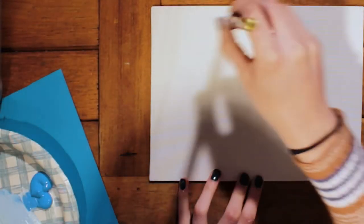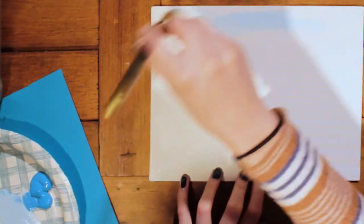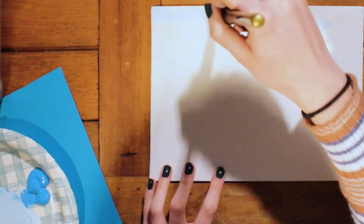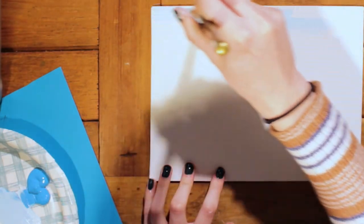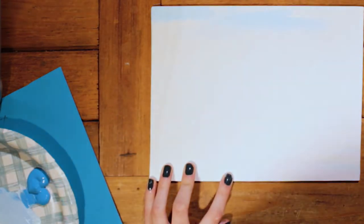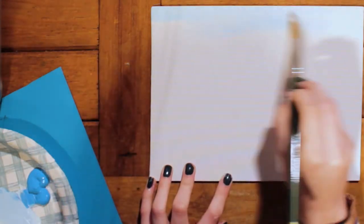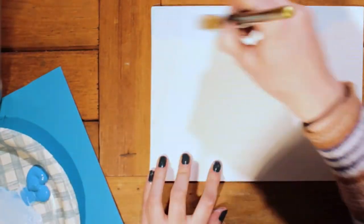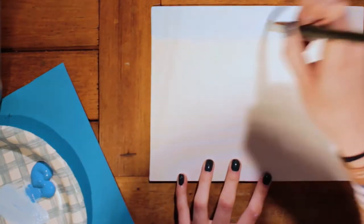And then I'm just going to start at the top and just go back and forth, let it blend nicely. Make sure you get all the way to that. I'm going to use a bigger brush for the sky so it doesn't take as long, and so it blends a little nicer when it's bigger too.